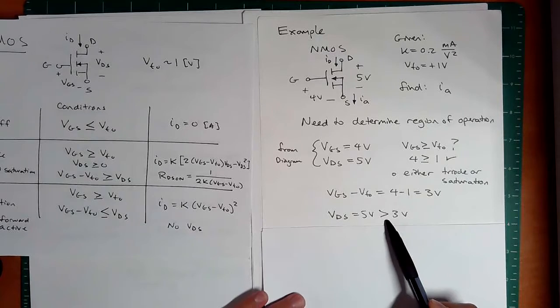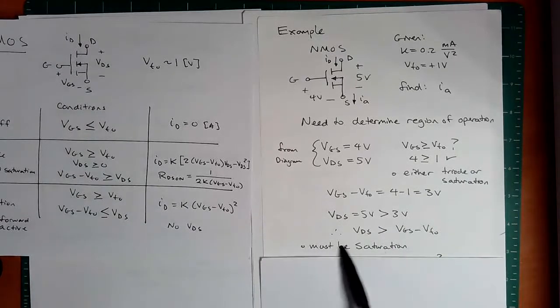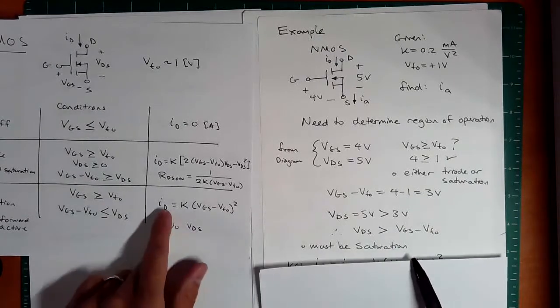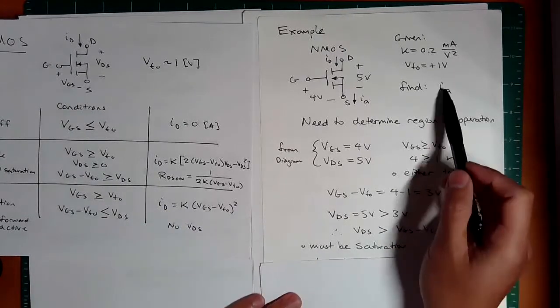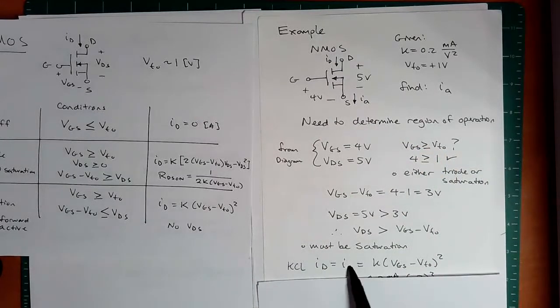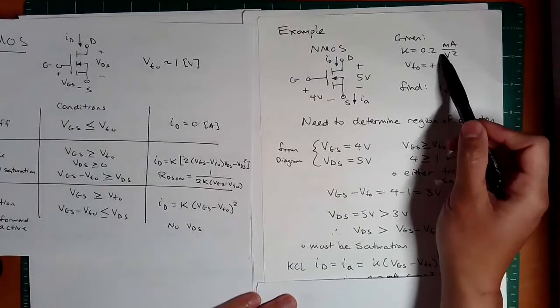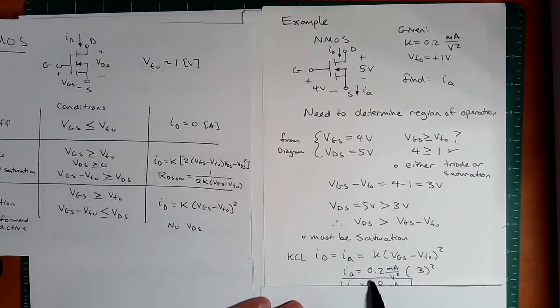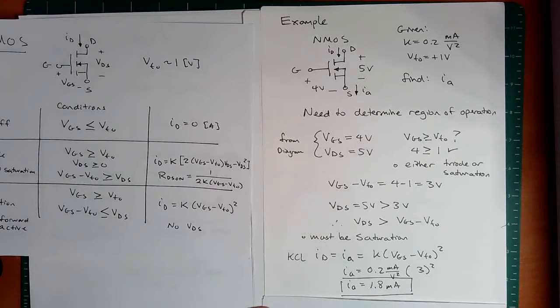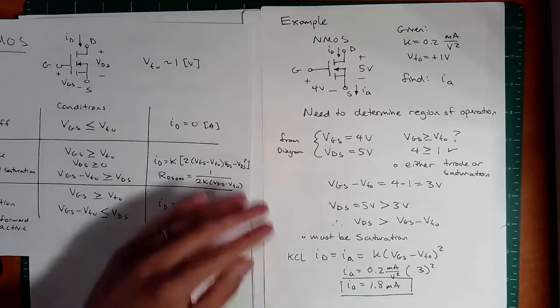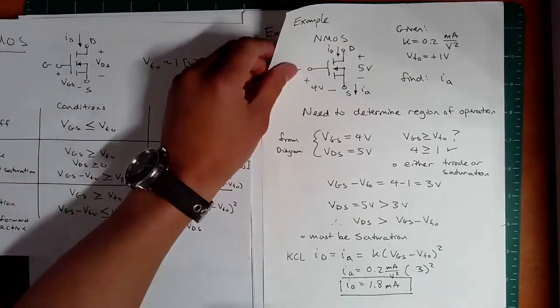So VGS minus VTO is now three volts. So we have VGS minus VTO is three volts, but VDS is five. It looks like we are in the saturation mode. And if we want to find the current because we know Id and Ia are the same by KCL, then we can just apply this equation, 0.2 milliamps per volt squared, three squared, no problem, 1.8 milliamps. Let's do the next one.